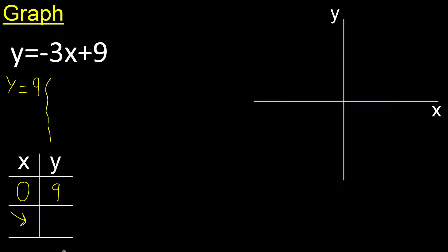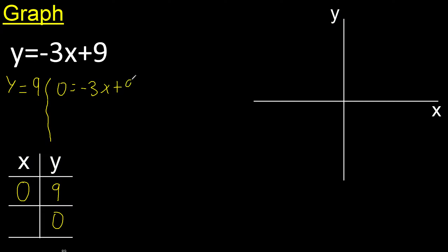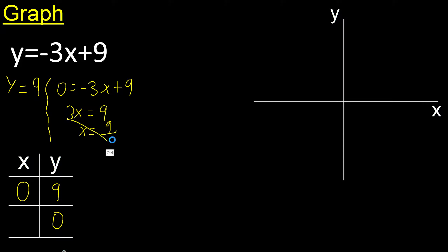Here any number or here any number. For example, y is 0. Find x. Here change the sign. Positive. 9 divided by 3. 9 divided by 3 is 3. x is 3.